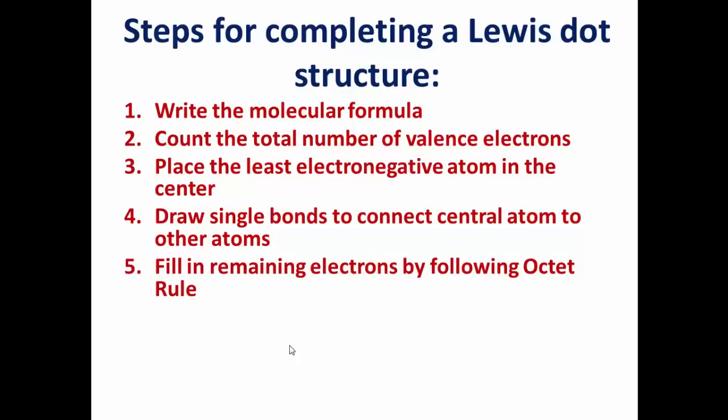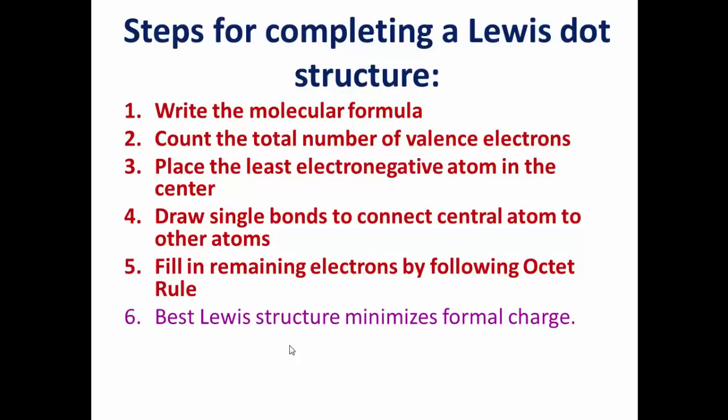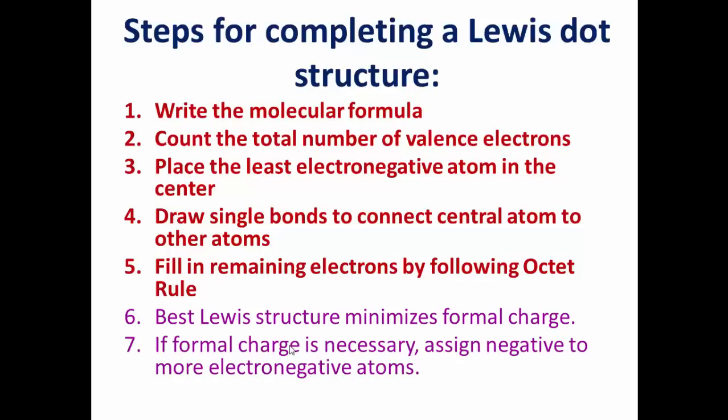Fifth, you need to fill in the remaining electrons by following the octet rule. And finally, sometimes you'll have a couple different options. So the best Lewis structure minimizes formal charge. And if you have to have a formal charge on some of your atoms, you want to assign negative formal charges to more electronegative atoms. The sum of formal charges should equal the overall charge.